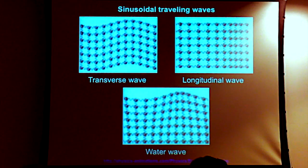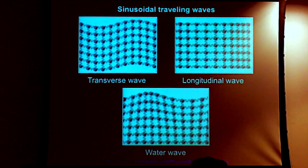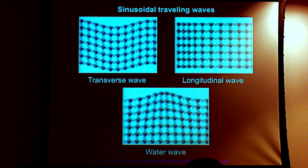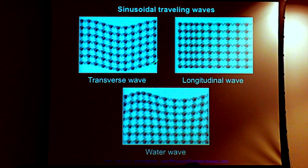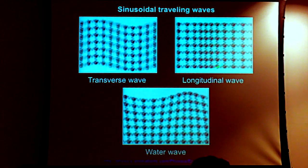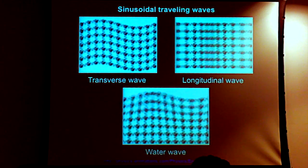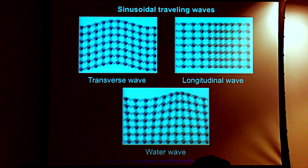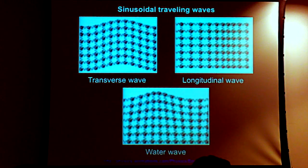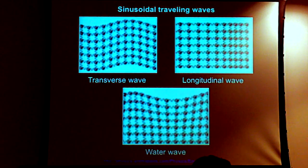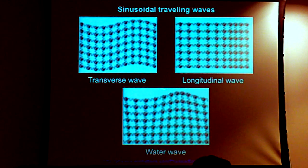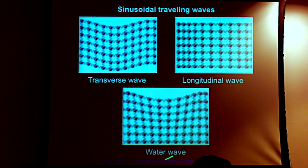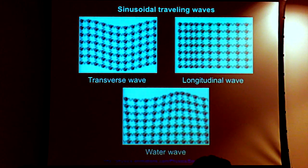We see that transverse waves, which are the ones we're most often interested in, differ from longitudinal waves — compression and rarefaction waves in air, like sound waves from a violin, flute, or organ. Here is an illustration of water waves, where it's not just up-and-down or to-and-fro motion of the medium's particles. Near the surface, particles are actually undergoing a circular motion.